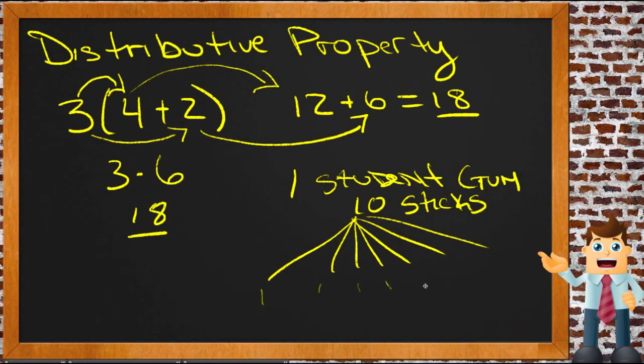Each of these students out here gets one piece of gum. So you distribute that gum out among the other students. Distribution means to give out. So you can see where that name applies to how the distribution property works. We're giving out this multiple of 3 to each of the numbers inside the parentheses.